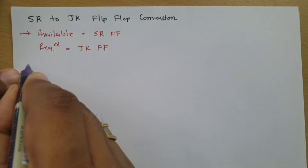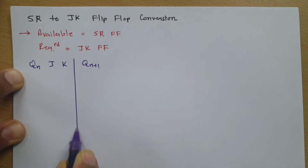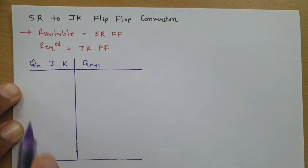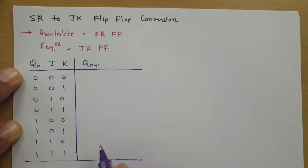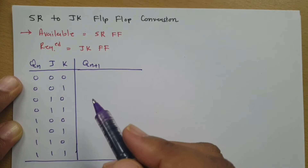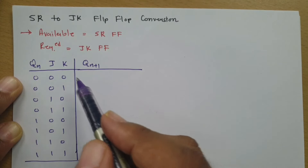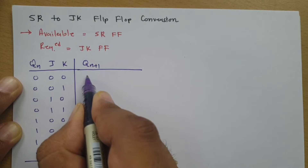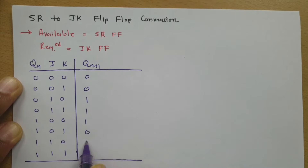The characteristic table shows the current state input with respect to the next state Q(n+1). We have Q(n), J, and K — three terminals — giving a total of eight combinations. You need to remember this characteristic table for the JK flip-flop. A memory aid for Q(n+1) is: double 0, triple 1, 0, 1, 0. That is how we can remember the characteristic table of the JK flip-flop.